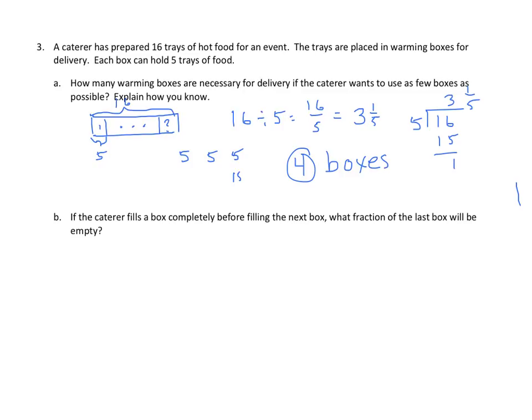Now, let's look at B. If the caterer fills a box completely before filling the next box, what fraction of the last box will be empty? Well, again, we have our 5 in 1 box, 5 in another box, 5 in the other box. They're filled. Now, the last box gets 1. How many more spaces are there? There are 4 spaces. So, 4 out of 5 are empty. So, in a way, I can take my 1 minus my 1 fifth, because I'm filling that spot. And that becomes 4 fifths. Again, 4 fifths represents the 4 empty spots in a box that can hold 5. So, we're putting in 1, that fills 1 fifth, 4 fifths are left over.